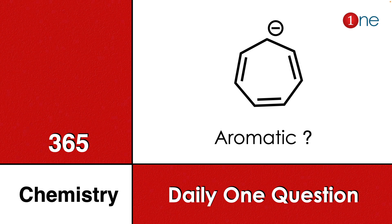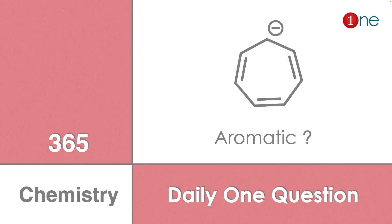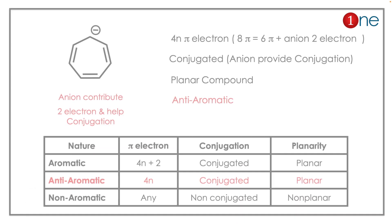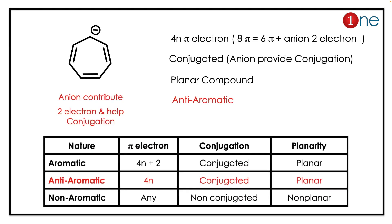Welcome to One Chemistry. This is the 365 Chemistry Series — daily one question for you. Here, a seven-membered cyclic system with an anion is given. You have to find whether the given compound is aromatic or not.